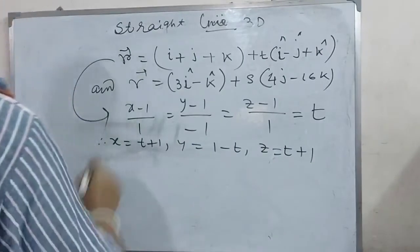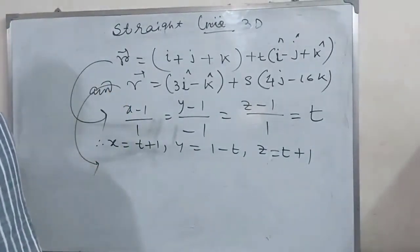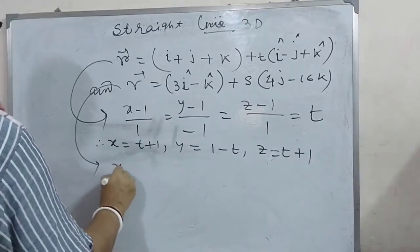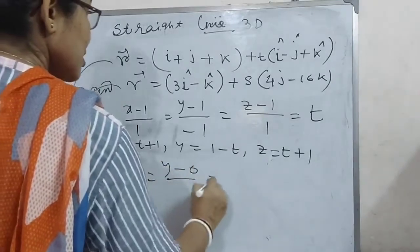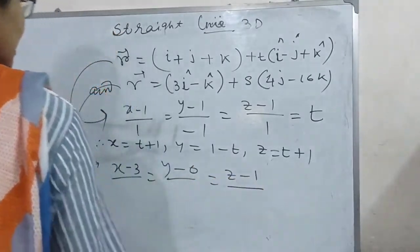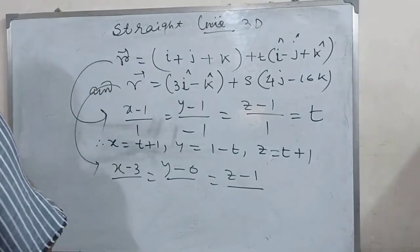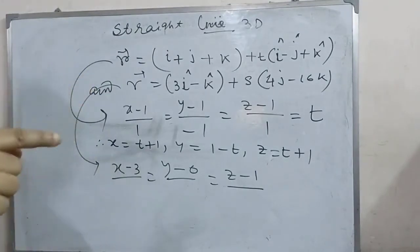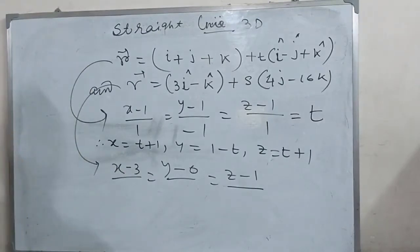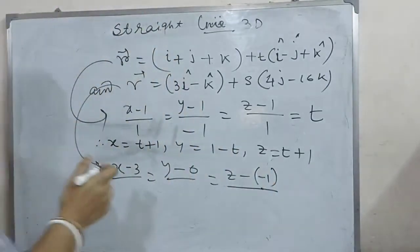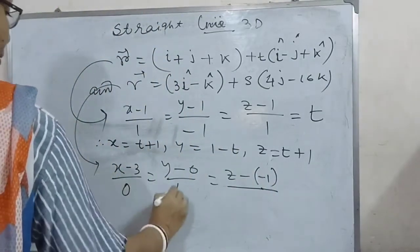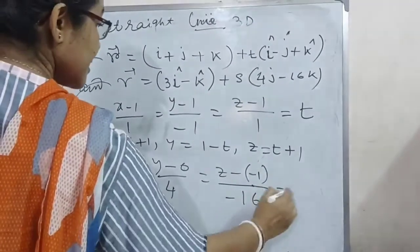The symmetrical form, that means the Cartesian form of the second equation, is: (x minus 3)/0 = (y minus 0)/4 = (z minus minus 1)/(minus 16), and this is equal to s. Therefore, x equal to 3, y equal to 4s, and z equal to minus 1 minus 16s.